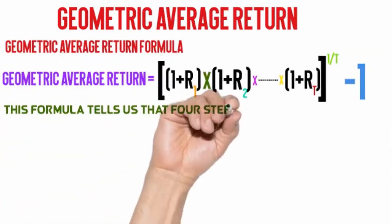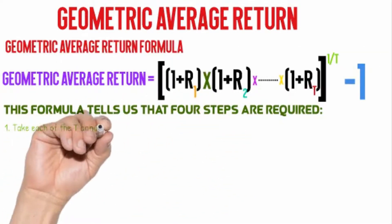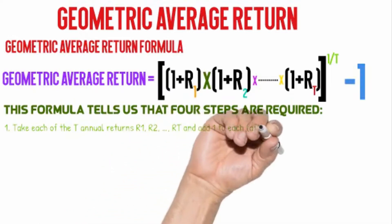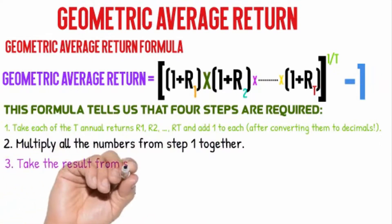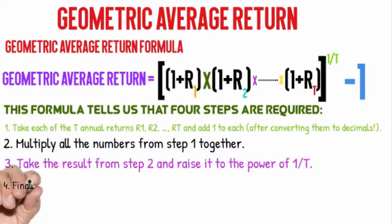Step 1: take each of the t annual returns r1, r2, rt and add one to each after converting them to decimals. Step 2: multiply all the numbers from step 1 together.